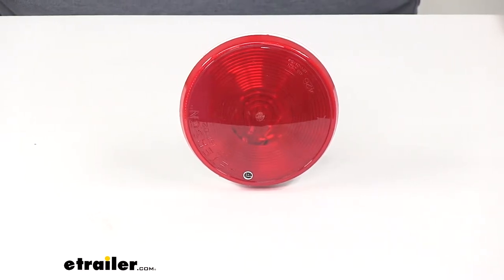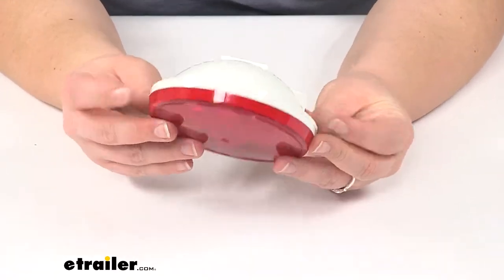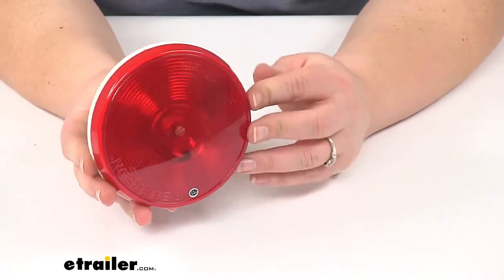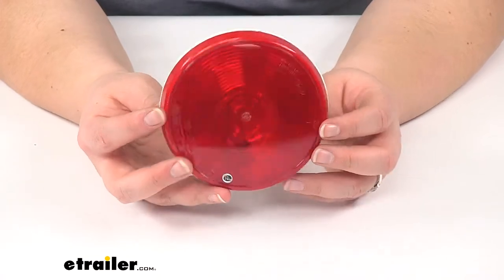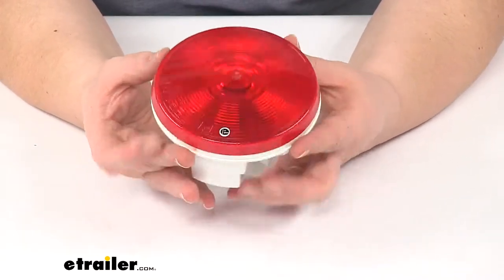It has a round design with a red lens. This incandescent trailer light is going to be a great replacement for any broken or damaged lights on your trailer, and it's going to give us our stop, tail, and turn signals when it's properly mounted.